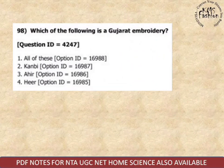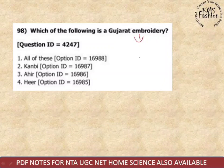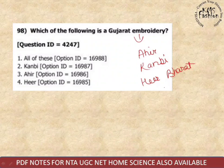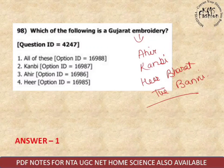Next: which of the following is a Gujarat embroidery? Gujarat embroideries include: Aheer, Kanbi, and Heer bharat — also called Rabari or Banni. All of these are correct options.